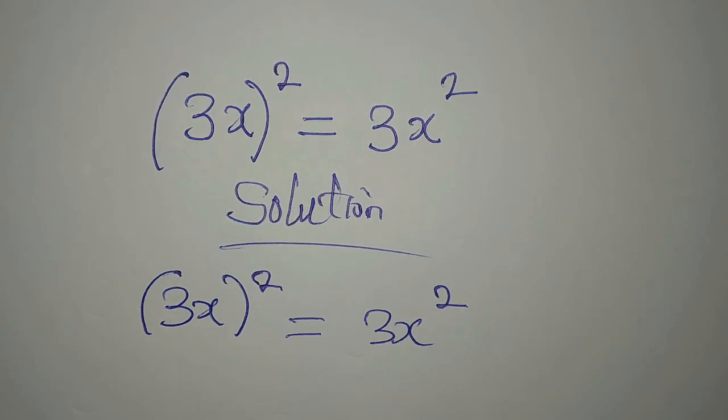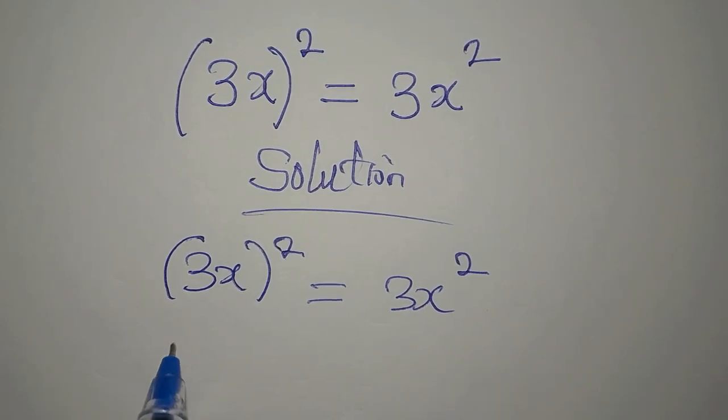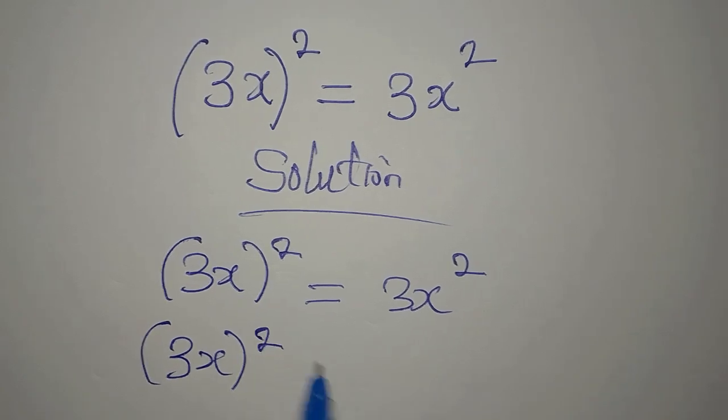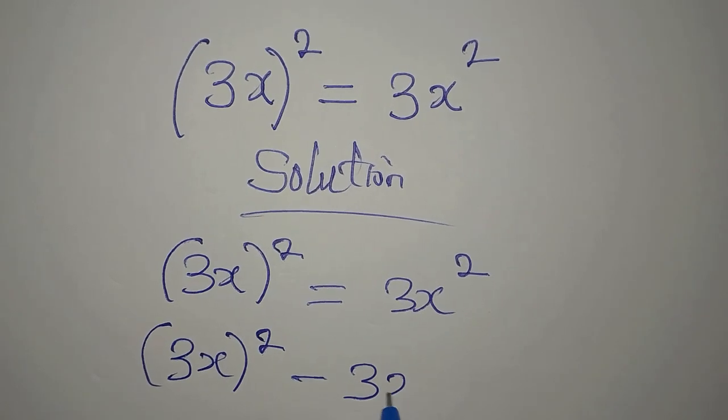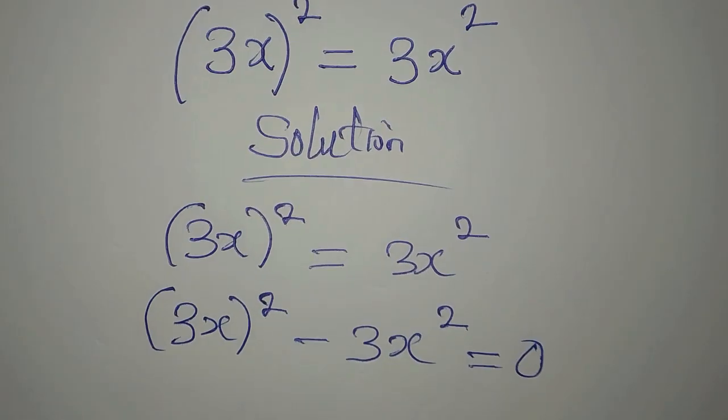What is here to solve? Let's bring this to the left and we're going to have (3x)² minus 3x² = 0 because there's nothing on the right hand side.